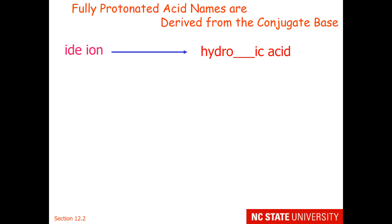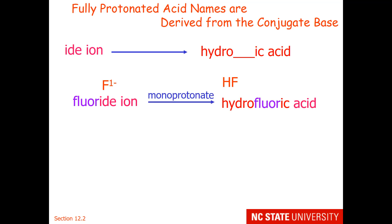If the ending of the ion is '-ide', then we call it a hydroic acid. For example, the fluoride ion, when you monoprotonate it, is named hydrofluoric acid — this is when it's soluble in water. You may have also heard this called hydrogen fluoride, which is when it is in its gas state.